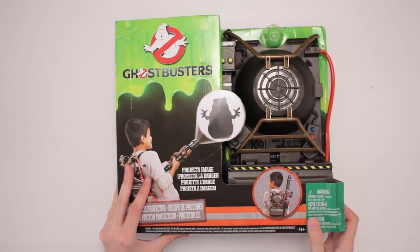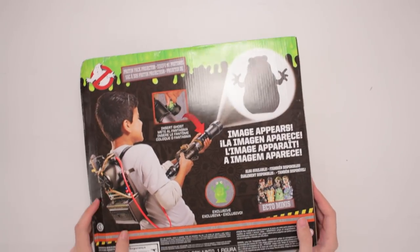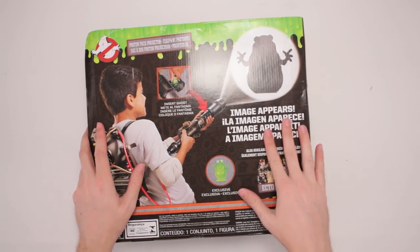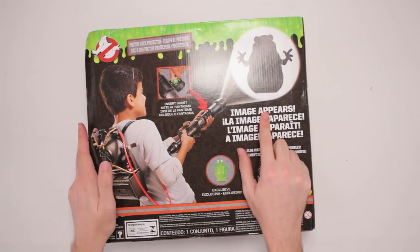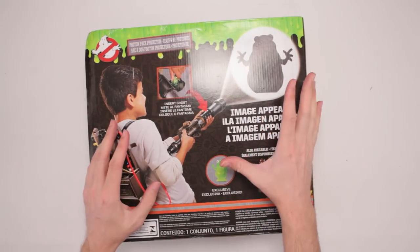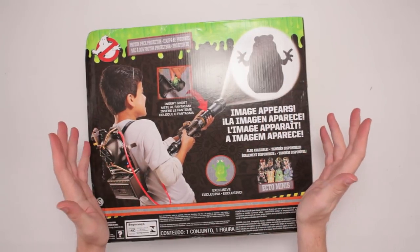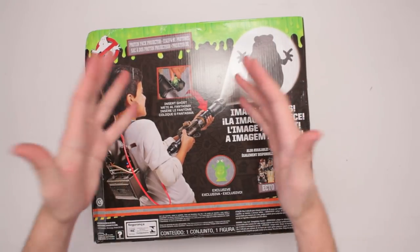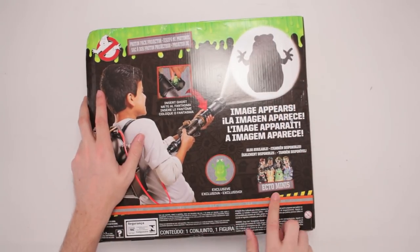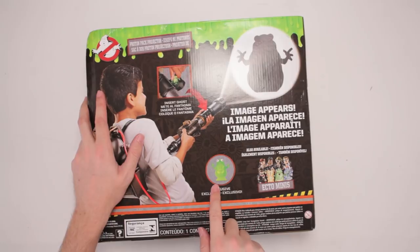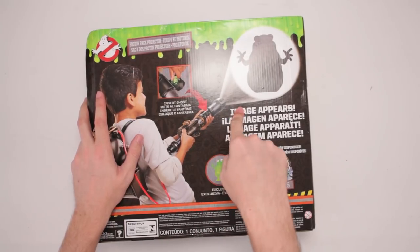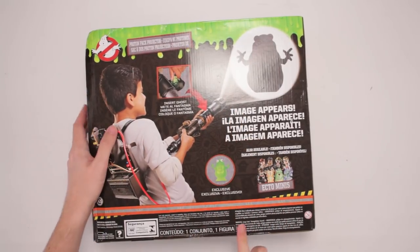So we got this here and I assume it's got the blaster on the inside. No matter what, they won't show his face. Image appears! So you insert the ghost, you do all that. Shows up on the wall there or on the floor, on the ceiling. Who knows where that ghost is going to show up. But then you get other Ecto Minis and I guess you put them inside and it'll project those ghosts as well.